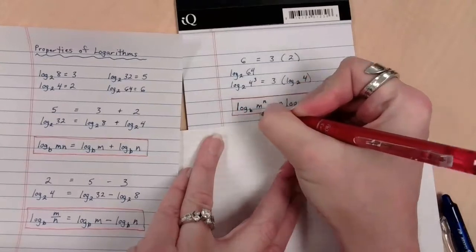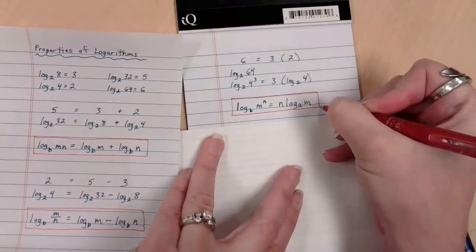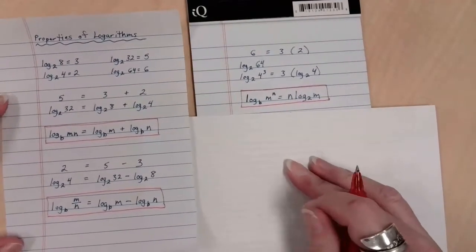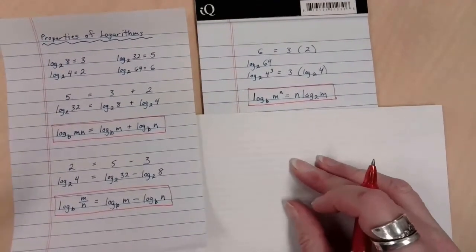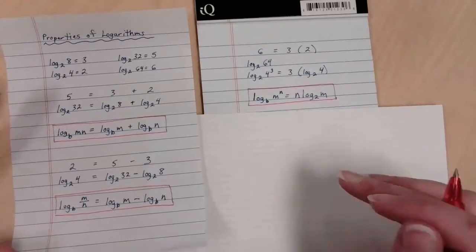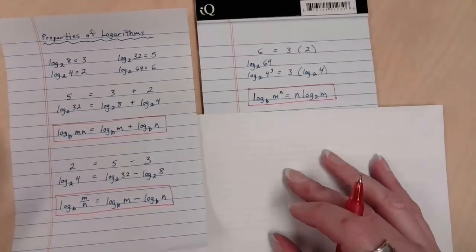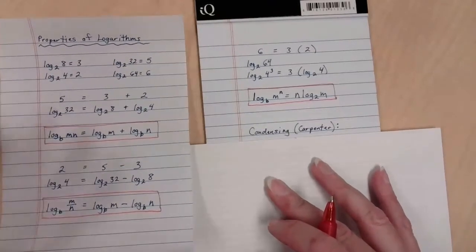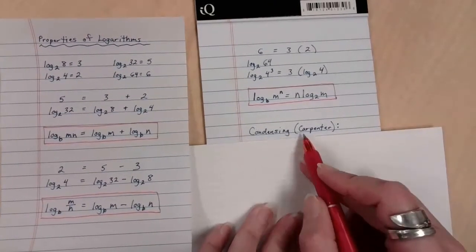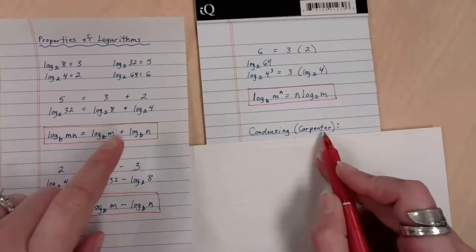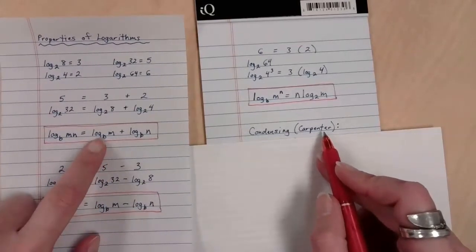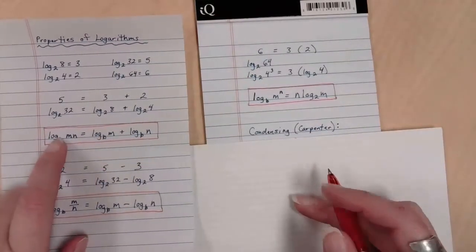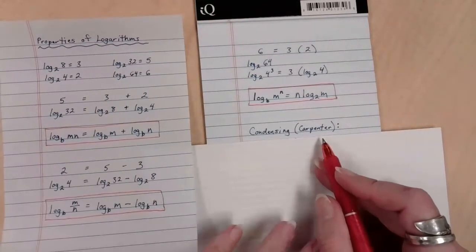I wanted to run through some examples of some of the things you might see with this. Ultimately, you would see some of these things taking effect when you're trying to solve equations that have logarithms in them. The two main things you'll see for practicing these skills usually are the first one: condensing. In my brain, if you are condensing, you are a carpenter. You are taking two logs and putting them together to make one log. If you put two logs together to make something, that makes you a carpenter.